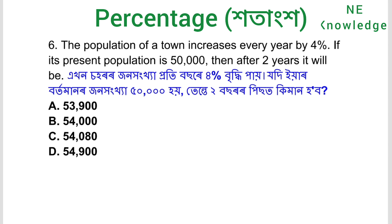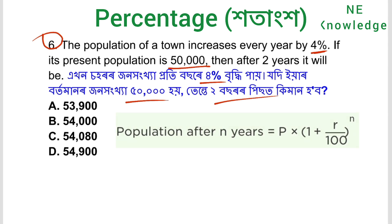We will see that if the population of a town increases every year by 4%, and the present population is 50,000, then how much will the population be after a certain period? So, what is the formula?